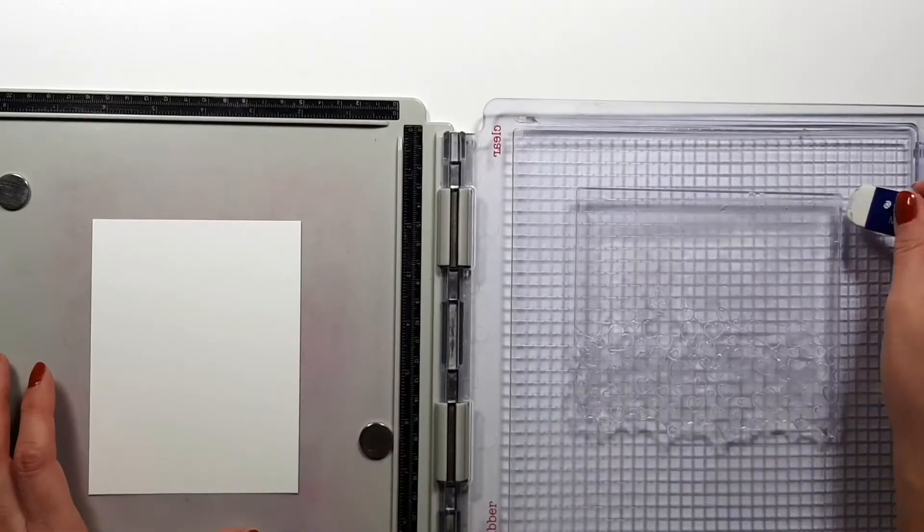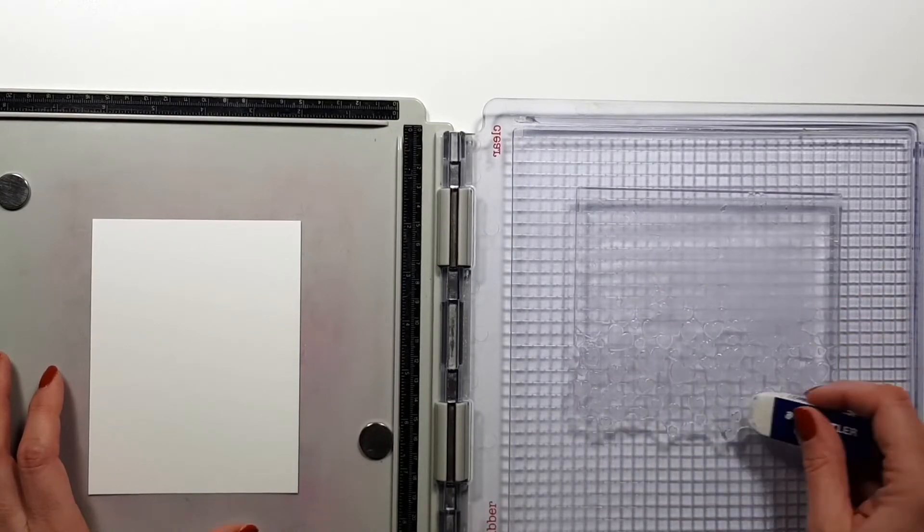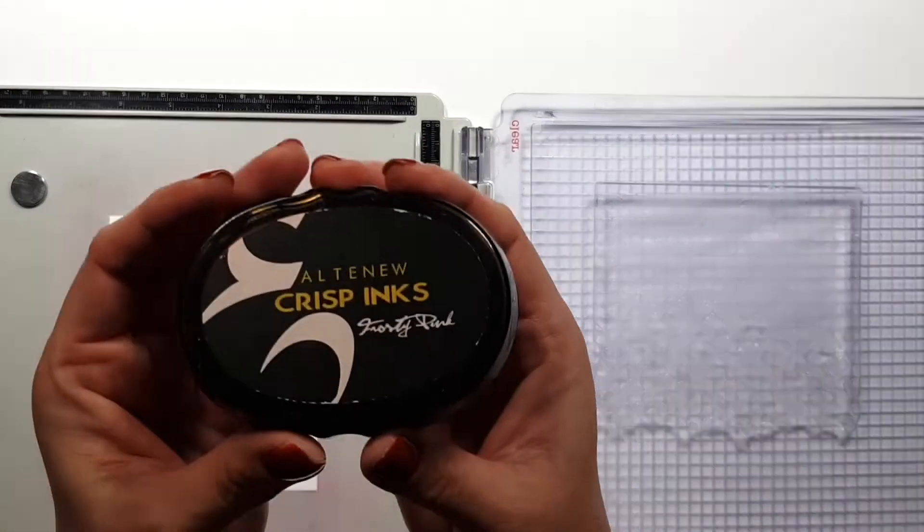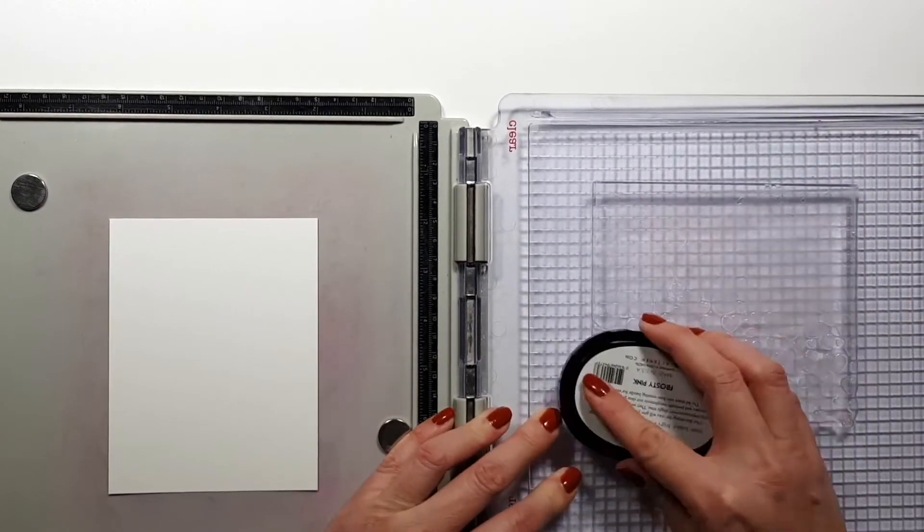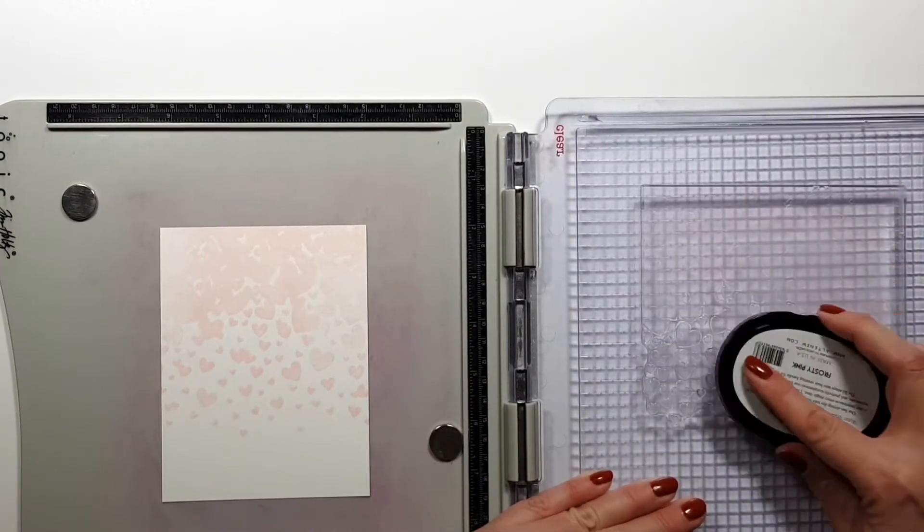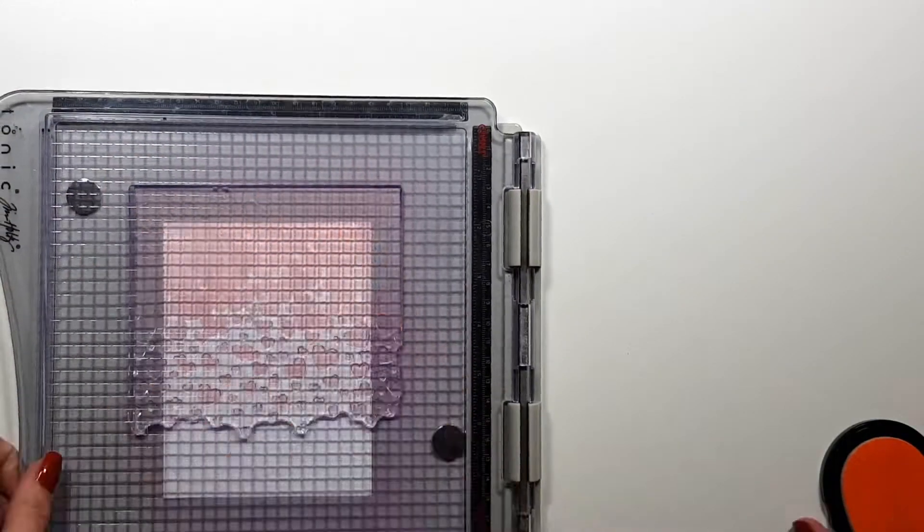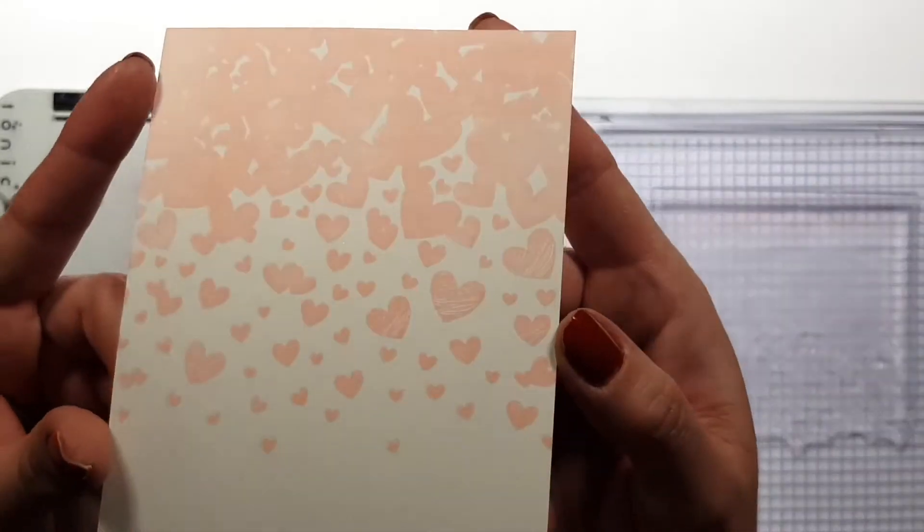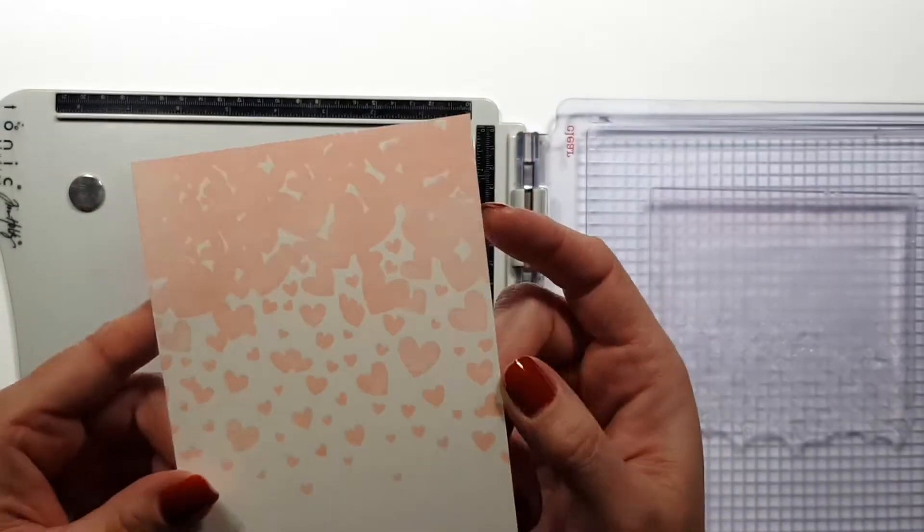I am kind of priming it with an eraser just so that the ink doesn't pull up on it, if that makes sense. Then I am double stamping it to have a better result.